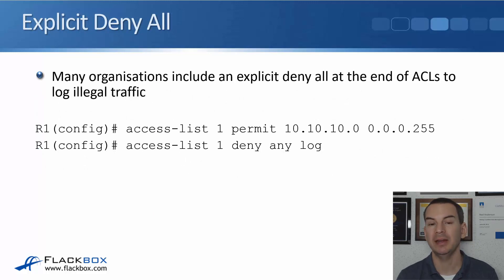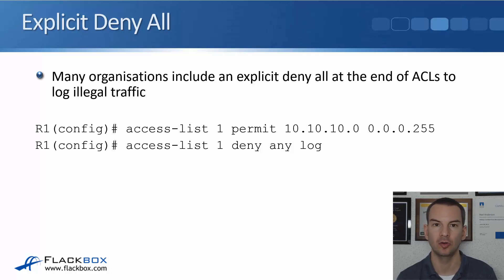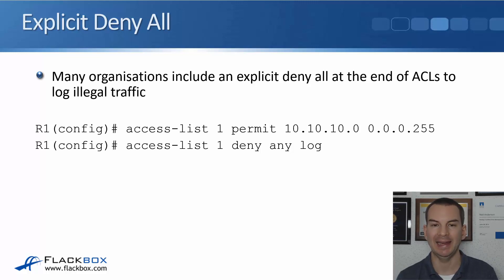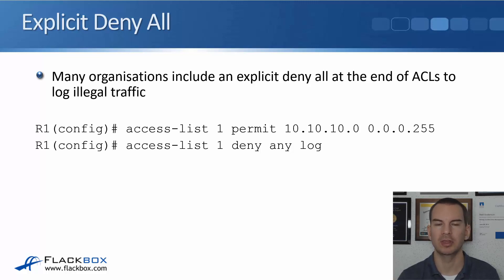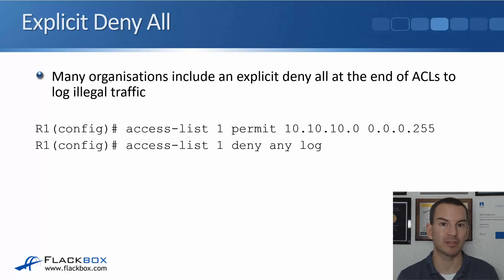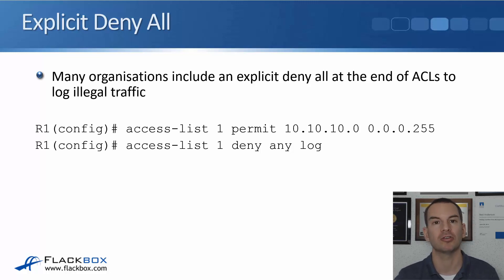Many organizations include an explicit deny all at the end of ACLs to log illegal traffic. They type something like 'access-list 1 deny any log'. You might wonder why they'd add it when it denies traffic anyway — it's so you can log it and send information to an external server. If somebody is sending traffic they shouldn't be, you're blocking it and also getting a report about it.